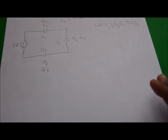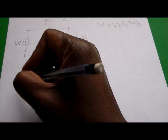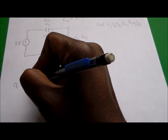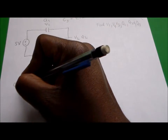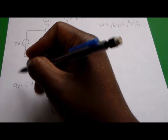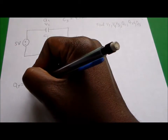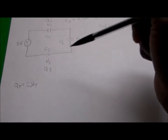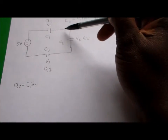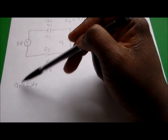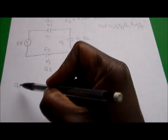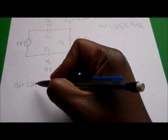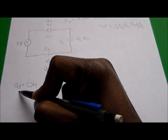Now, we know that Q — the charge across the capacitor plates — is equal to C times V. So the total charge equals C-total times V-total. And we can do this because it's a series circuit, so the charge across all of these capacitors is going to be the same. That means we can find the total capacitance, multiply by total voltage, and get the total charge.